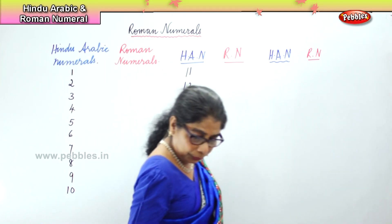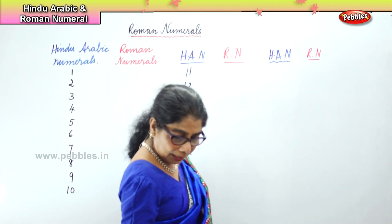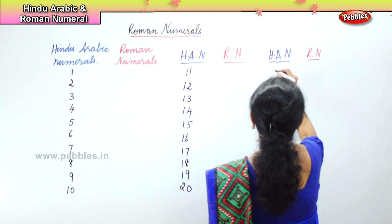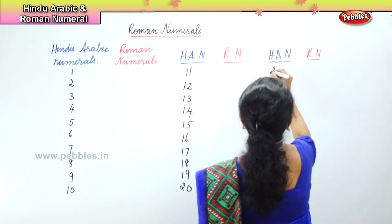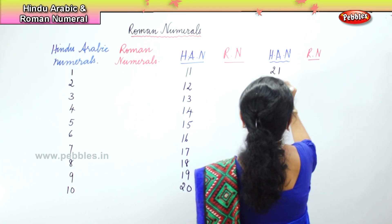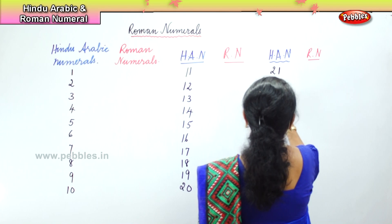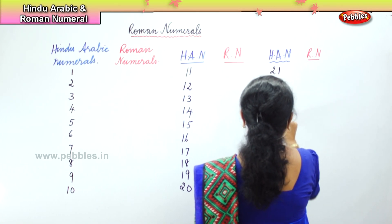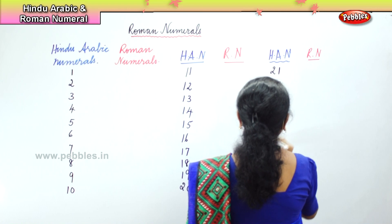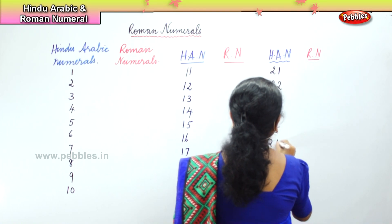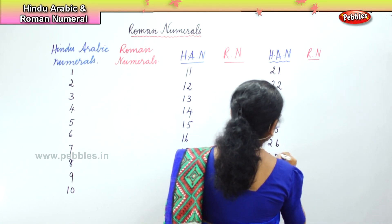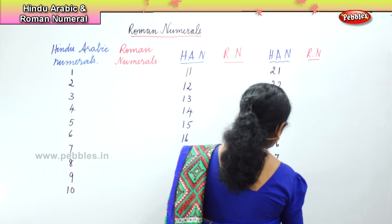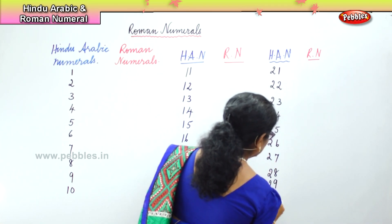Now what is the number? 21. From Hindu-Arabic: 21, 22, 23, 24, 25, 26, 27, 28, 29, 30. Now we'll build on our Roman numerals.